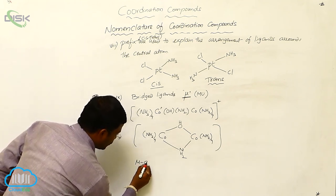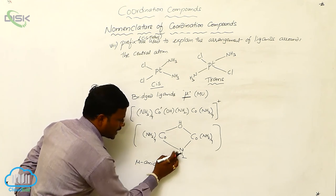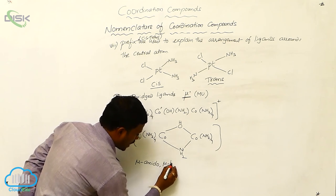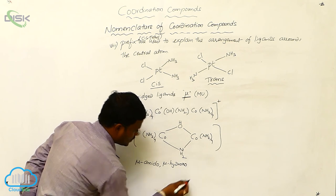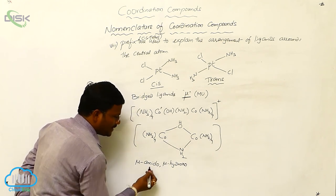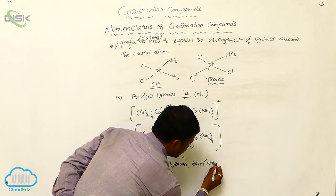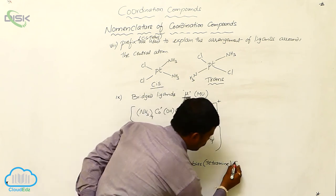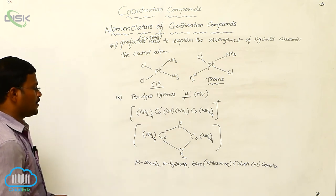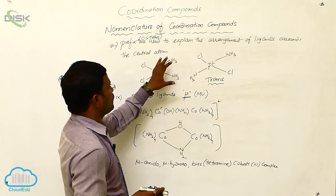So let us write the name: mu-amido, because NH2 is pronounced as 'amido' and mu indicates the NH2 group is present as a bridge between two metal atoms. Then mu-hydroxo. When writing the name for the coordination complex with different ligands, we follow alphabetical order: mu-amido, mu-hydroxo, bis(tetramine)cobalt(III) complex. This is the name provided when bridged ligands are present — this is the nomenclature of coordination compounds.